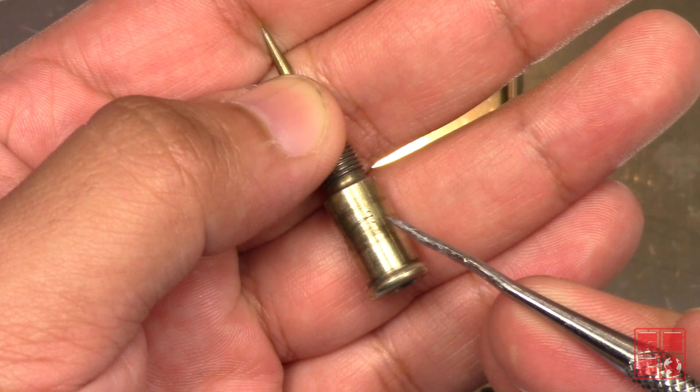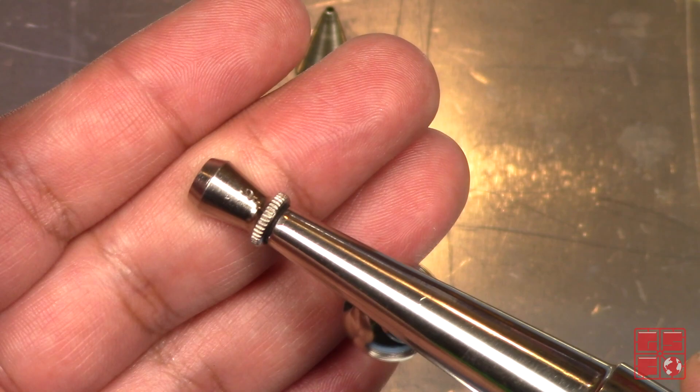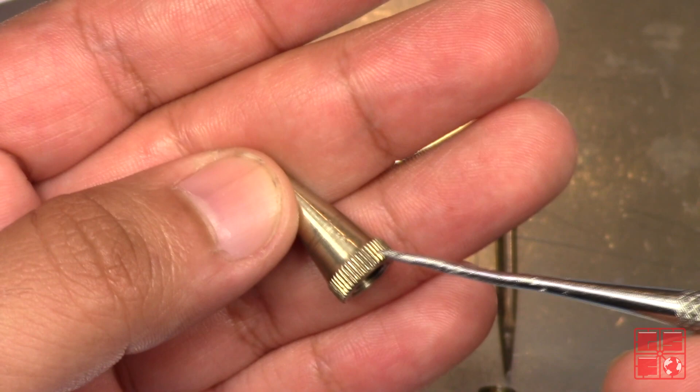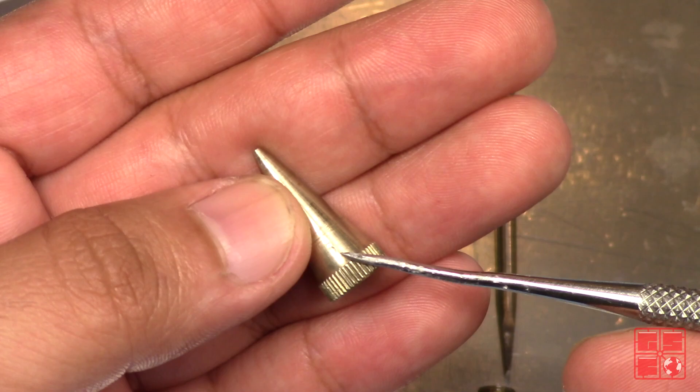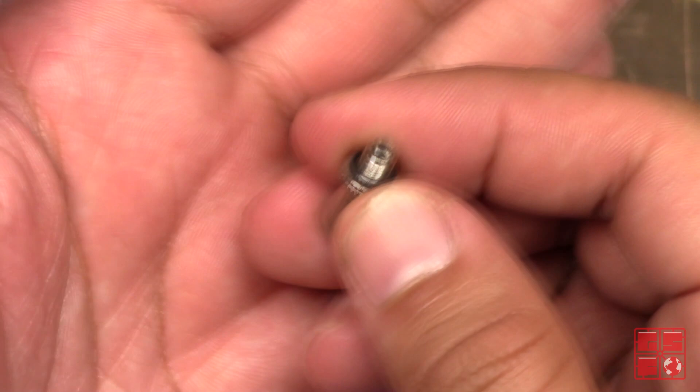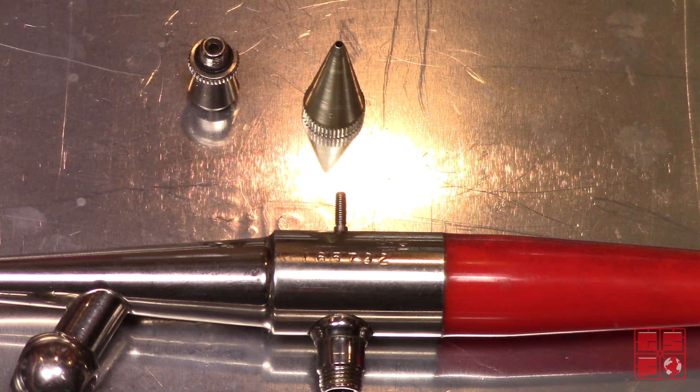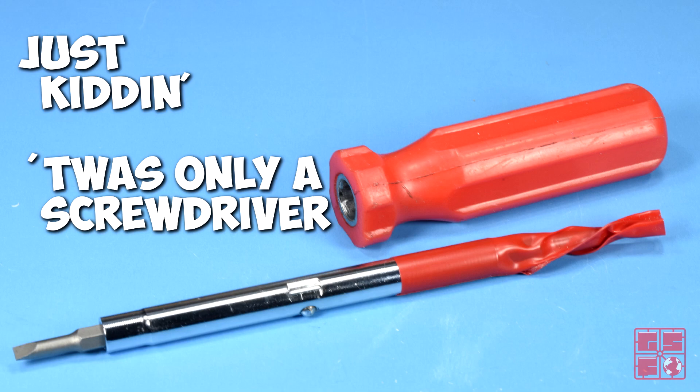Another thing I noticed in this particular airbrush is that it was set up with a number three needle and a number three air cap. The air cap's o-ring is dry rotted and collapsed. There's quite a few things wrong with this airbrush. Well, only one thing left to do. Time to order parts.